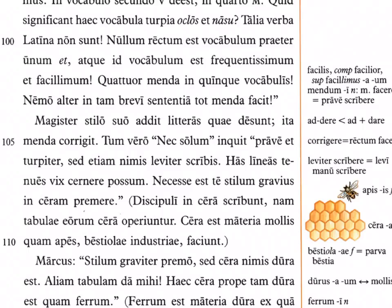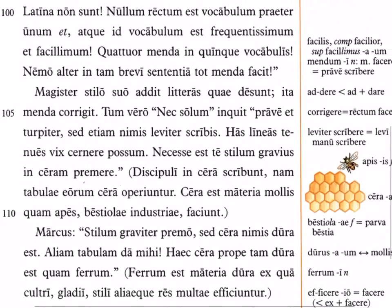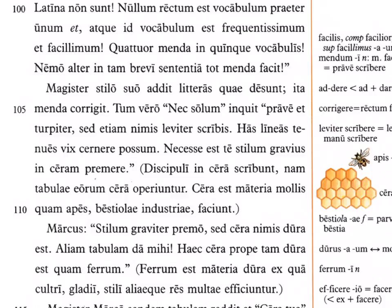'Nemo alter in tam brevi sententia tot menda facit' — no one else makes so many errors in so short a sentence. The teacher with his stylus adds the letters which are missing, 'hita menda corrigit' — and corrects the errors. Then he says not only does Marcus write incorrectly and ugly, 'turpiter' being a synonym for 'foede,' but his letter forms are also really bad.